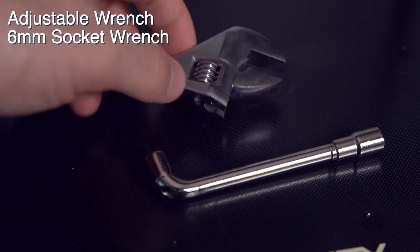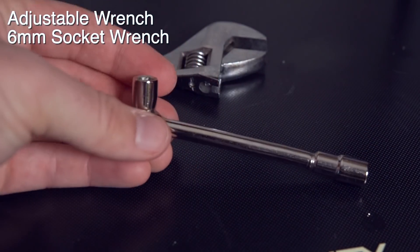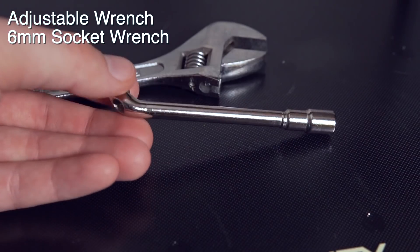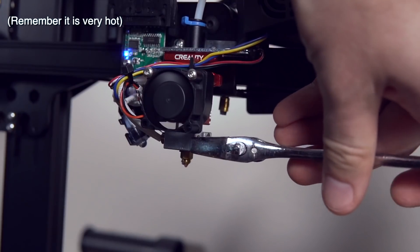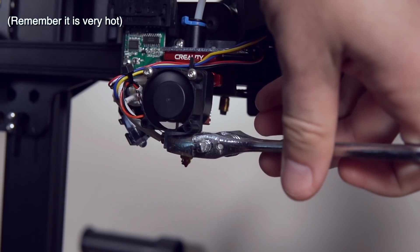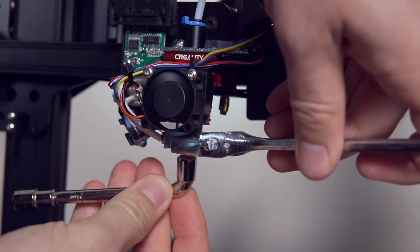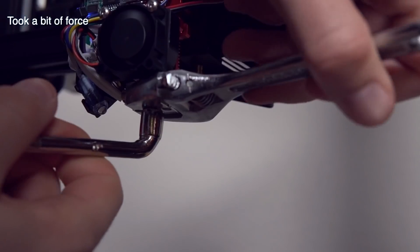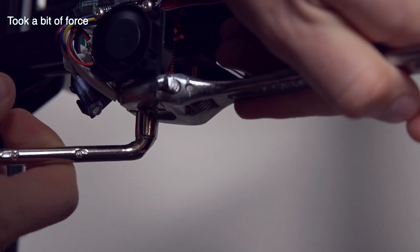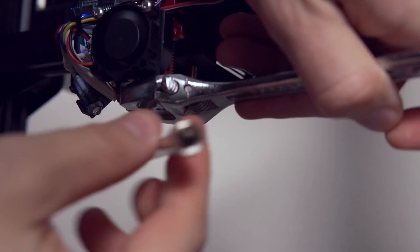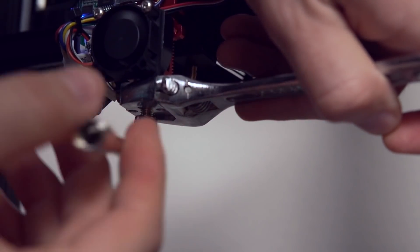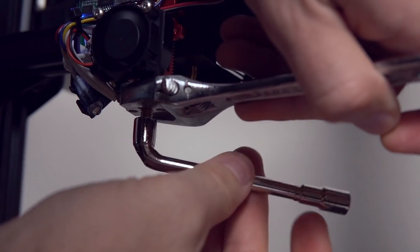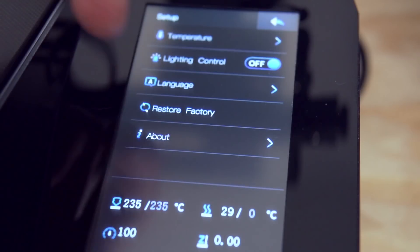Now that we've done that, we are ready to remove the existing nozzle, and we are going to be using an adjustable wrench and a 6mm socket wrench to do so. For this, just go ahead and slide the adjustable wrench onto the heater block and then use the 6mm wrench to turn the nozzle. It did take a lot more oomph than I thought that it would, so just make sure you've got a good grip on the adjustable wrench and you are supporting the hotend.